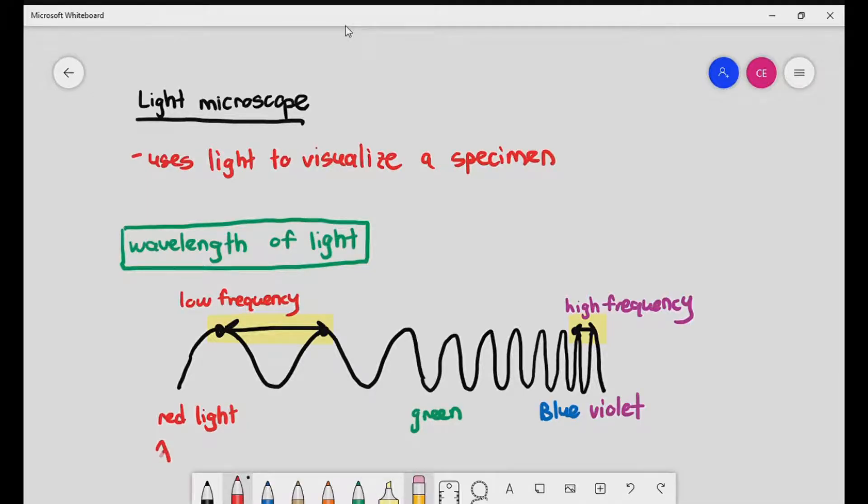Red light has a wavelength of about 700 nanometers. And remember in the previous video, we did introduce the concept of nanometers. And violet light will have a frequency of about, give or take, 400 nanometers.